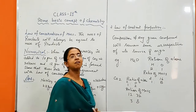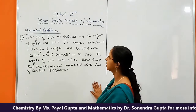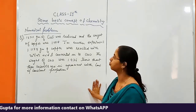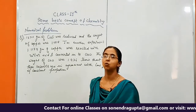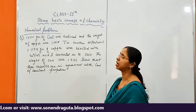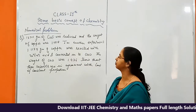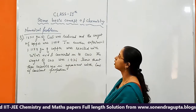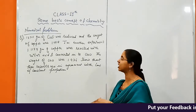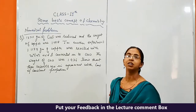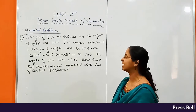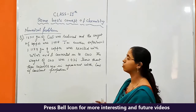Now let us look at question number 2, which is based on the law of constant proportion. The numerical states: 1.375 grams of copper oxide was reduced and the weight of the copper obtained was 1.098 grams. In another experiment, 1.1179 grams of copper was reacted with nitric acid and converted into copper oxide, and the weight of copper oxide was 1.476 grams. We need to show that the results are in agreement with the law of constant proportion.